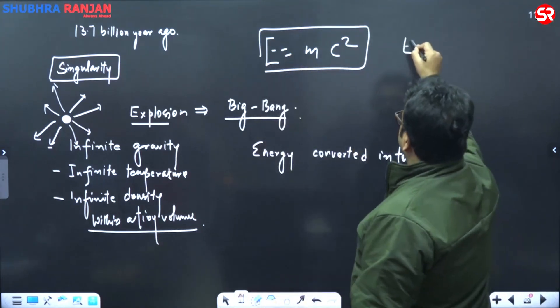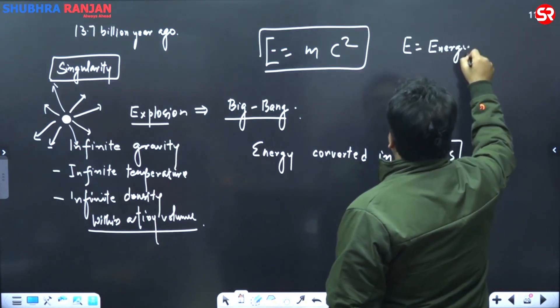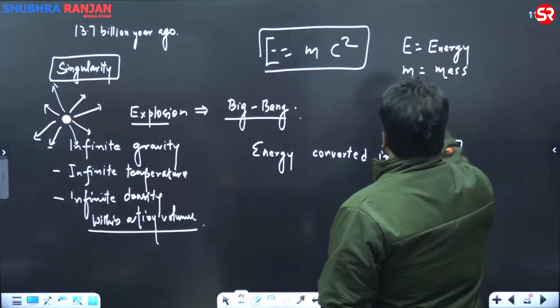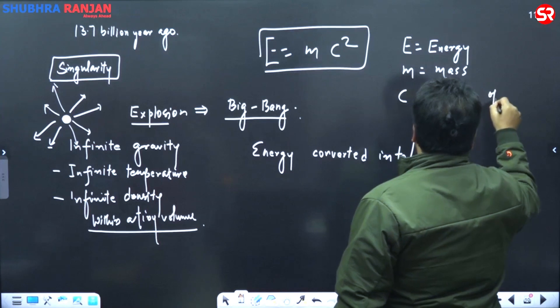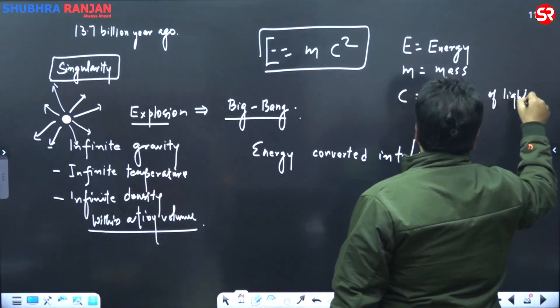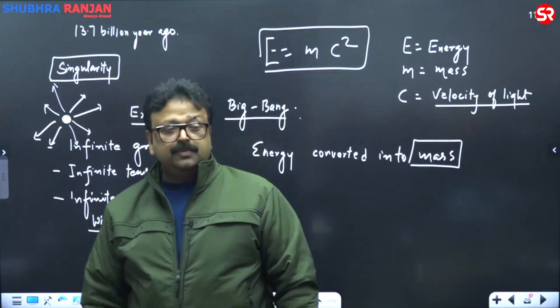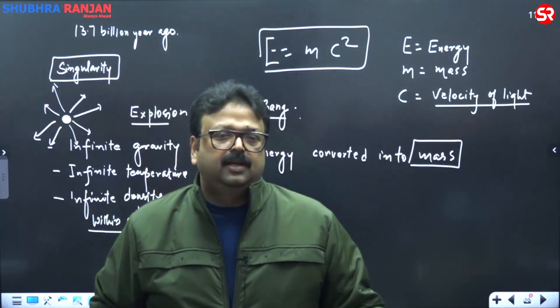And most of you knows that Einstein has given this equation E is equal to mc². This is the equation that gives you the relationship between energy and mass, where E is energy, and m is mass and c represents velocity of light. That happened to be the fastest moving thing in our universe, 3×10⁸ meters per second, this is the velocity of light.